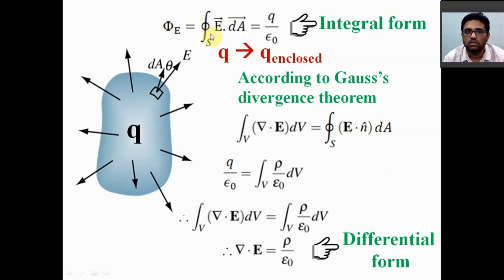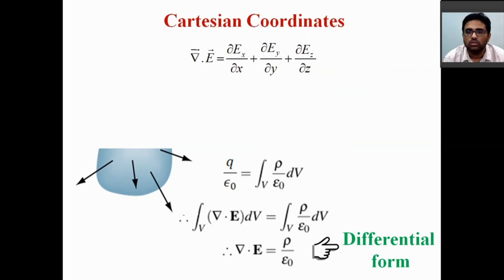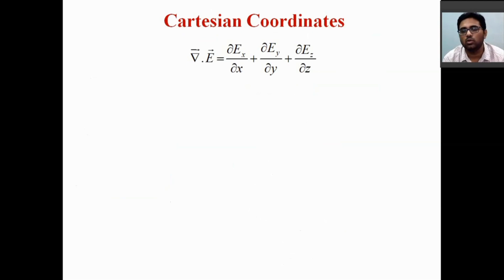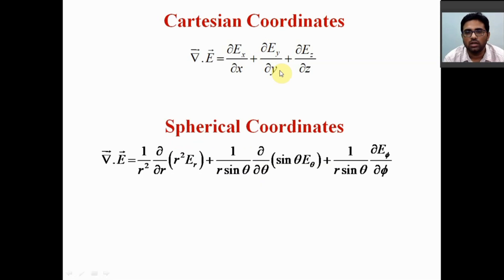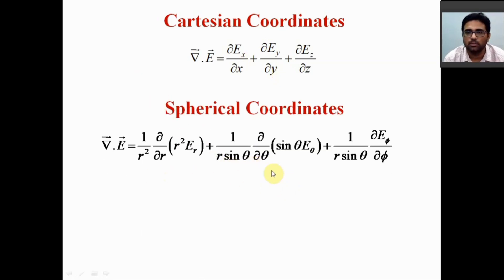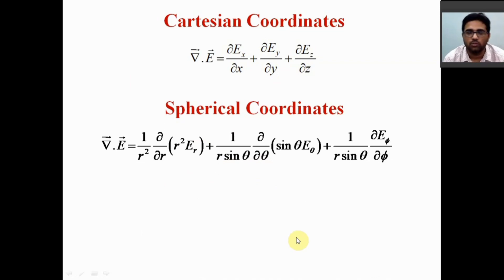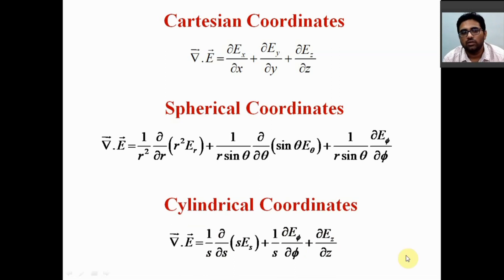These two forms — the integral form and the differential form — help us find out the electric field very easily. The differential form of Gauss's law has different forms in different coordinate systems. In Cartesian coordinates, the divergence of electric field takes one form with components x, y, z. In spherical polar coordinates, the form will be different with components r, theta, phi. In cylindrical coordinates, the form will be like this. There are transformation equations from one coordinate system to another that you already know.